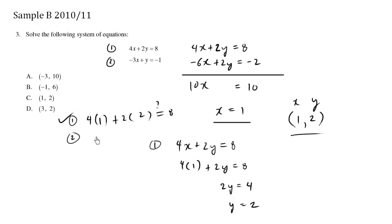I'm testing equation number 2. So negative 3x, x is 1, plus y, my y is 2. Does it equal negative 1? We have negative 3 plus 2, which is negative 1. Yes, left side equals right side. We verified this point as our answer. So the answer here is C.